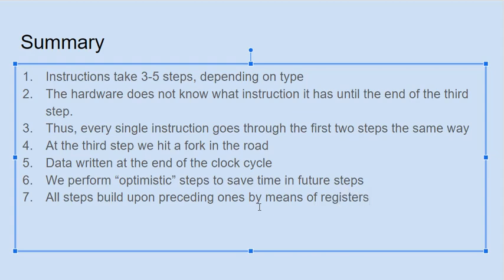That is the basic idea of the multi-cycle for all possible instructions. Some instructions take three to five steps depending on type; the hardware doesn't know until the end of the third step which instruction it has, so the first two steps are the same for everybody. We perform optimistic steps early on that may turn out to be unnecessary, but they cost nothing. All steps use data from previous steps by means of registers. That is the multi-cycle configuration datapath for the MIPS architecture — hope this was helpful. Please leave comments if you have any questions.